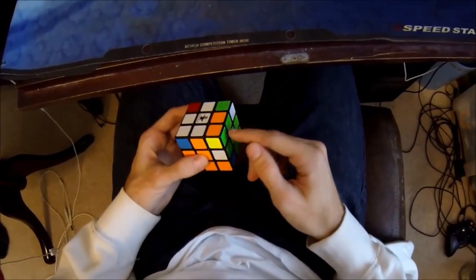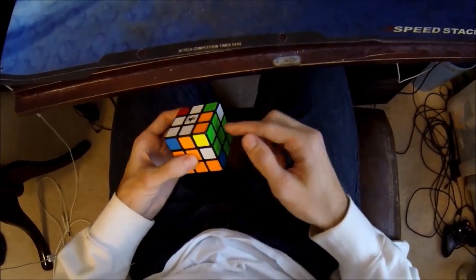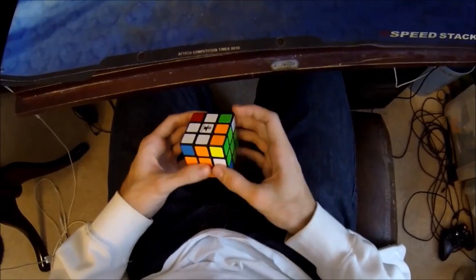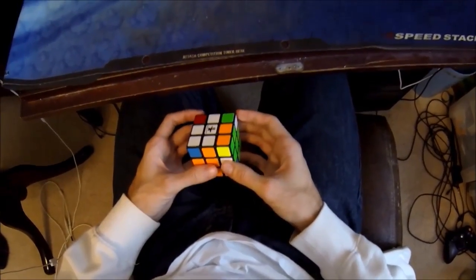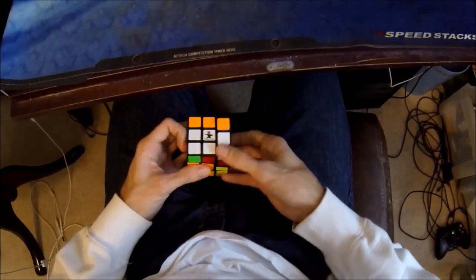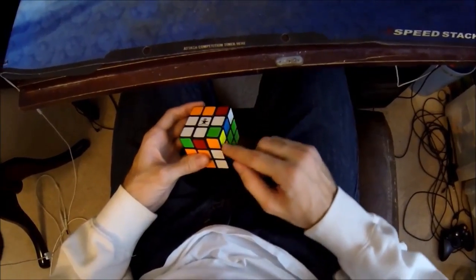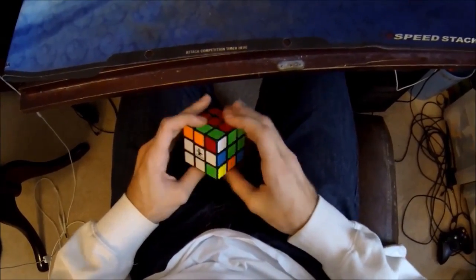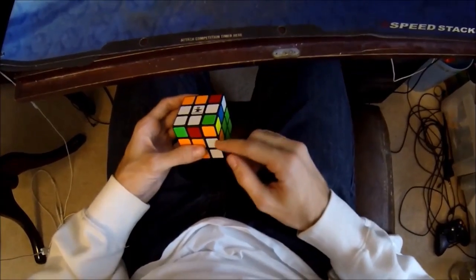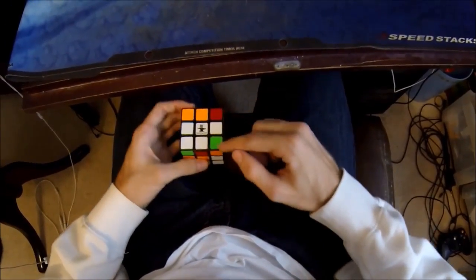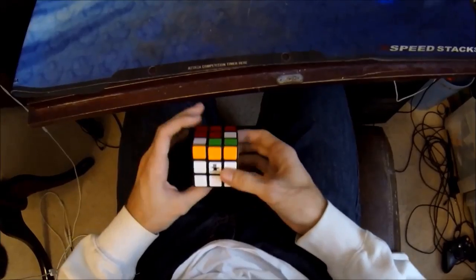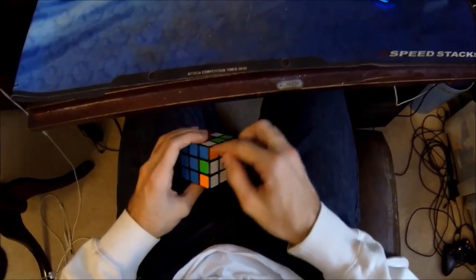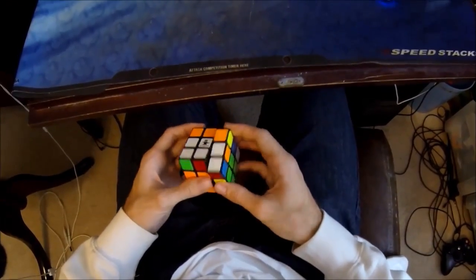So Winter Variation, it's used for when your edges are correct and your pair is built. Summer Variation, it's very similar, but instead of your pair being built, it's for the case that's like this. So if your corner is like this, Summer Variation is used to solve, to create this simple pair and also orient your corners for the last layer.